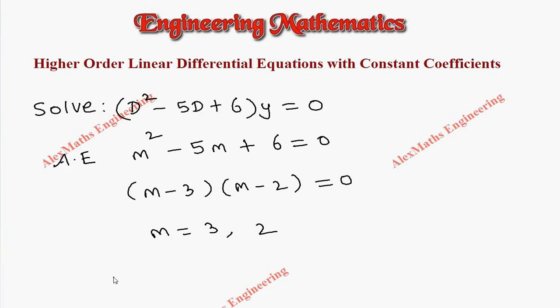Now, the complementary function is nothing but there are two different values. So, c₁e^(3x) is the first term and another term is c₂e^(2x). Since two different values are there, we follow the rule accordingly.